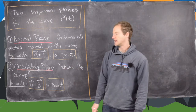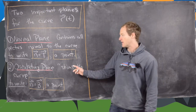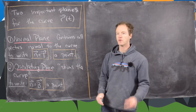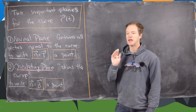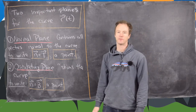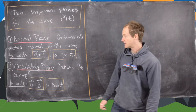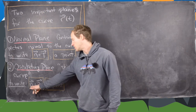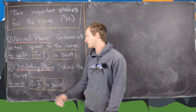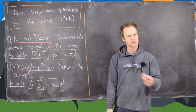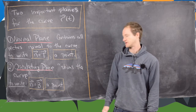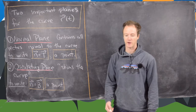Next is the osculating plane, and this is the plane that skims the curve. In other words, it's the plane that is closest to containing the curve at a given point. In this plane, the normal vector to the plane is the binormal vector. So if you look at the last video, we'll talk about how to find the binormal vector, and then you'll also need a point.